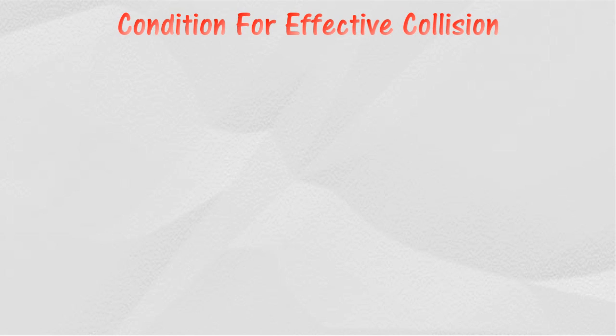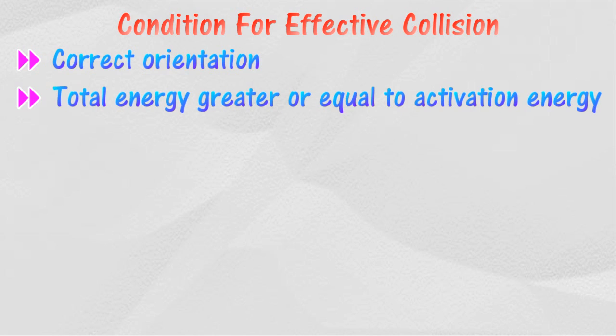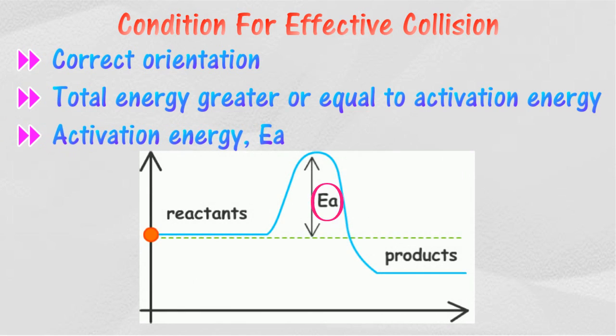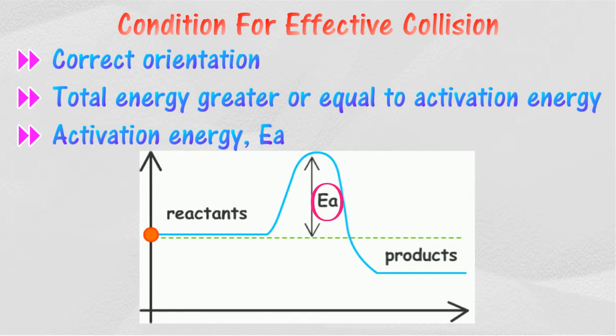Particles must fulfill two conditions for an effective collision to occur. Particles must collide with the correct orientation. Colliding particles must have energy equal to or more than the activation energy. Activation energy is the minimum energy needed by the reactant particles to react. Activation energy needs to be overcome by the reactant particles so that reaction can occur.